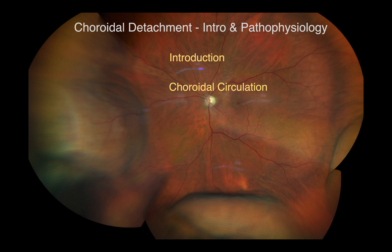The choroidal vasculature is supplied both by the long and short posterior ciliary arteries of the ophthalmic artery, which enter the choroid to form the arteriolar Haller and Sattler layers. These vessels supply the choriocapillaries.